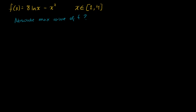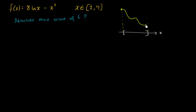The extreme value theorem tells us that on a closed interval, there are a couple of different scenarios for what a function might look like. We might hit a maximum point at the beginning of the interval, or we might hit an absolute maximum point at the end of the interval. Or we might hit an absolute maximum point someplace in between.